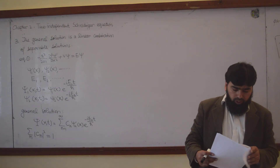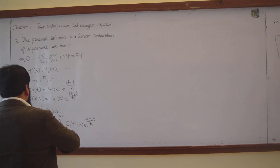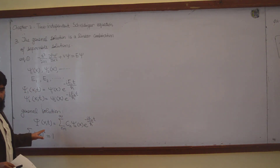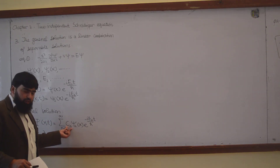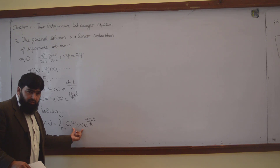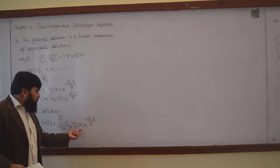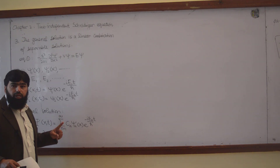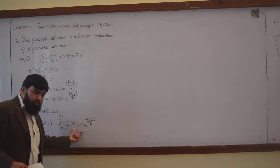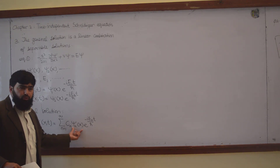We will now solve an example, and in doing so further clarify what the cₙ's are. The functions ψₙ(x) are orthonormal wave functions — not merely orthogonal and not merely normalized, but both orthogonal and normalized simultaneously.